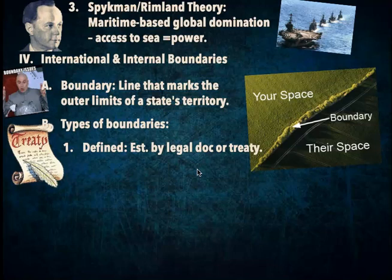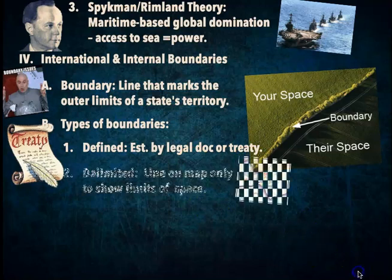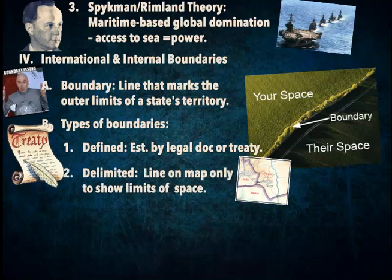The most basic kind of boundary is a defined boundary. There's little to no disagreement about it; there's usually been some kind of treaty between two or more states establishing it, everyone's good with it, and it has some kind of legal binding. Most boundaries around the world are defined boundaries. A delimited boundary refers to boundaries that you can see drawn on a map but that people don't really pay a lot of attention to on a day-to-day basis — like county lines within the state of Washington.